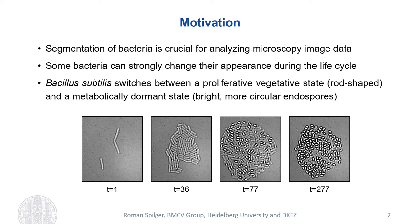However, a main challenge of analyzing the image data is that the appearance of bacteria changes strongly and inhomogeneously. Here you can see that in the progress of colony growth, bright more circular endospores are formed from the rod-shaped bacterial cells.